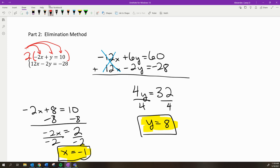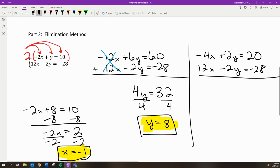I'll multiply the top equation by 2, giving -4x + 2y = 20. The other equation is still 12x - 2y = -28. Now when I add them, the y terms cancel this time.